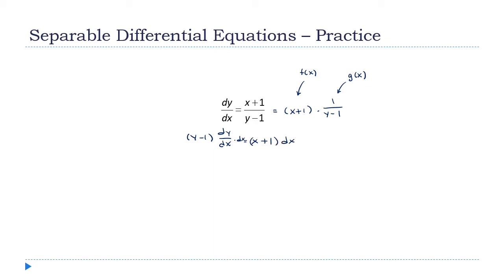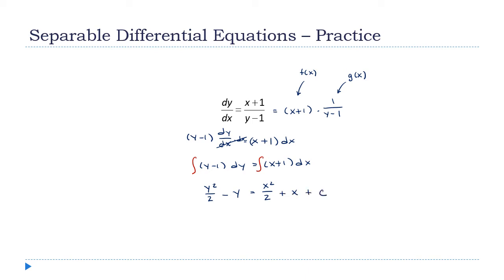Next, multiply both sides by dx. The dx's cancel on the left, giving (y minus one) dy equals (x plus one) dx. I'll be honest — treating dy/dx as a literal fraction is a slightly dubious thing to do, but in many scenarios it works and gives the right answers. Now integrate both sides: the integral of (y minus one) is y squared over two minus y, and the integral of (x plus one) is x squared over two plus x plus a constant.